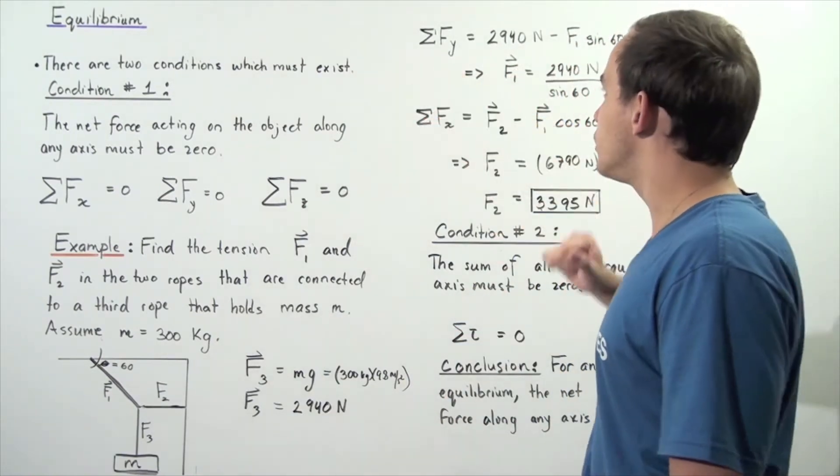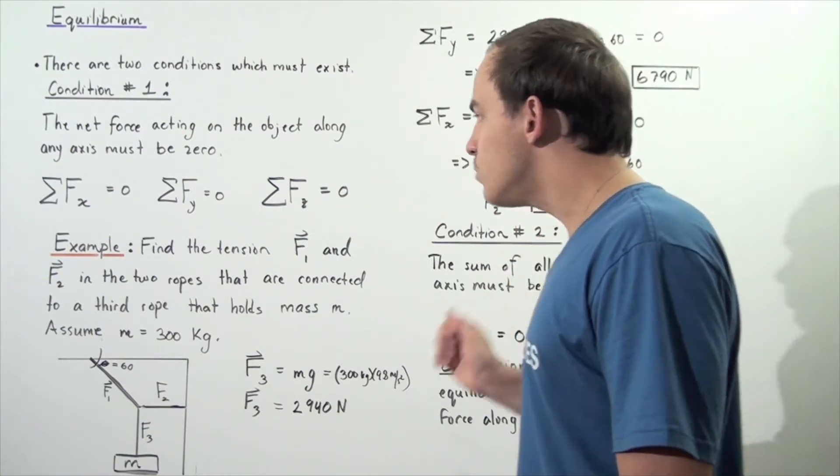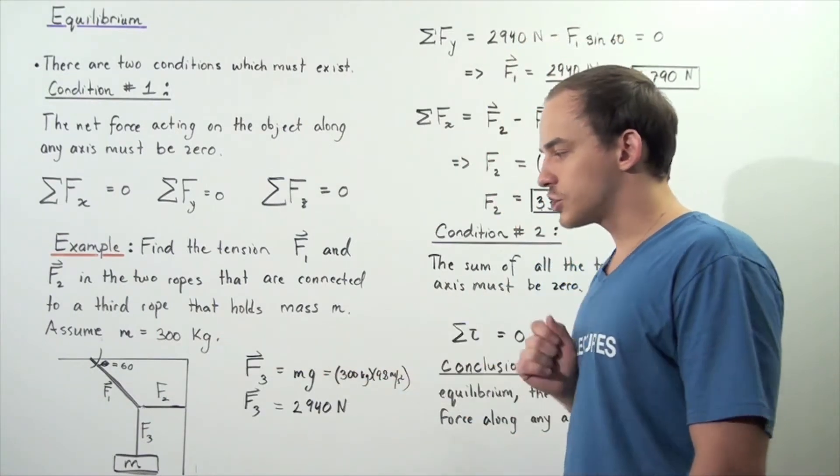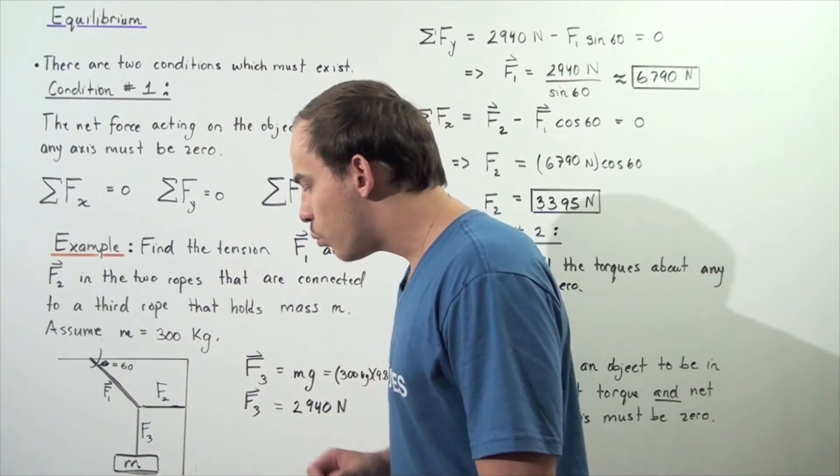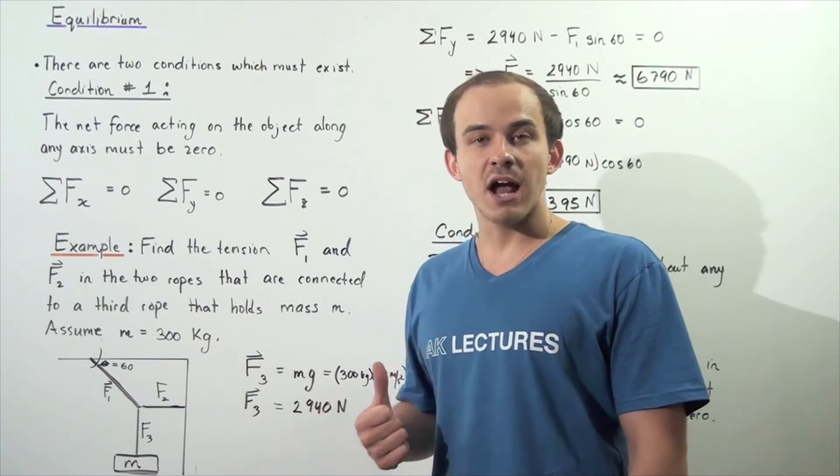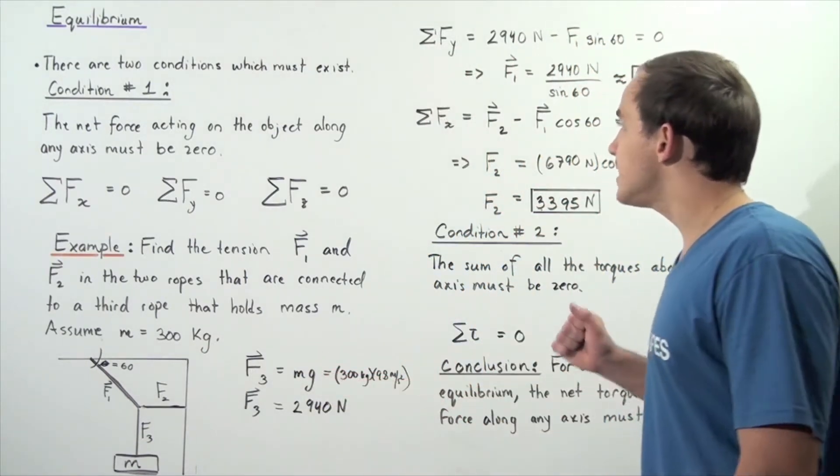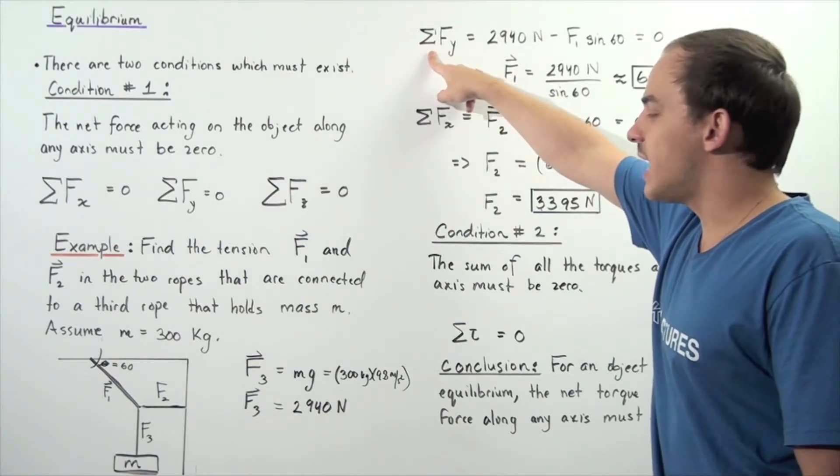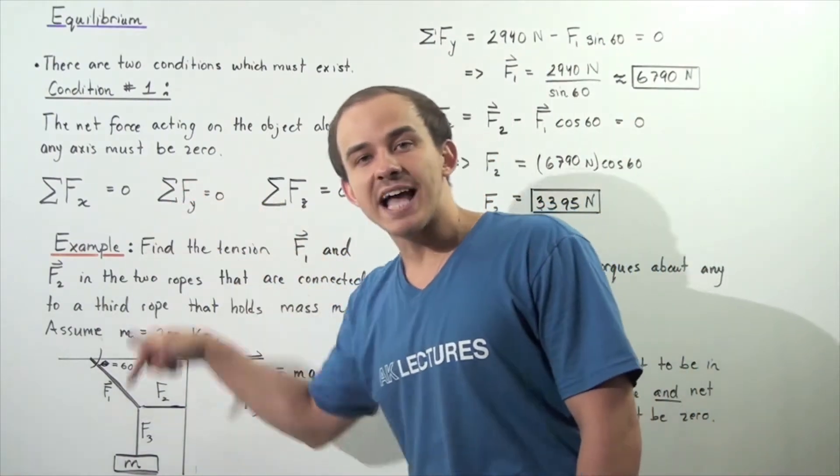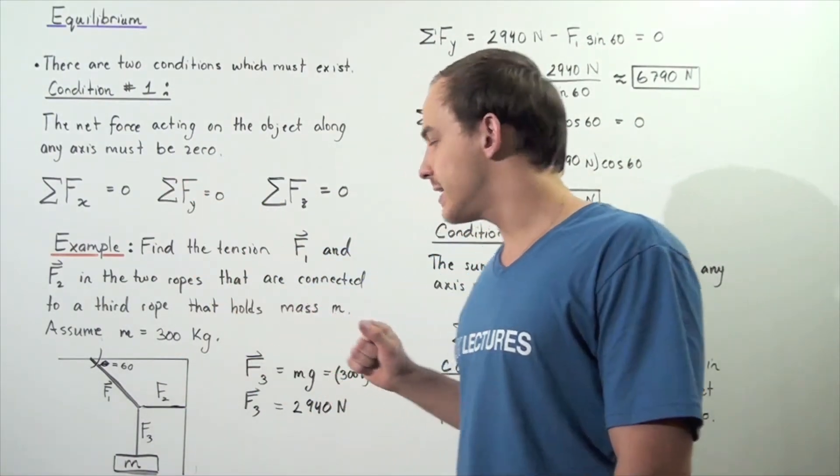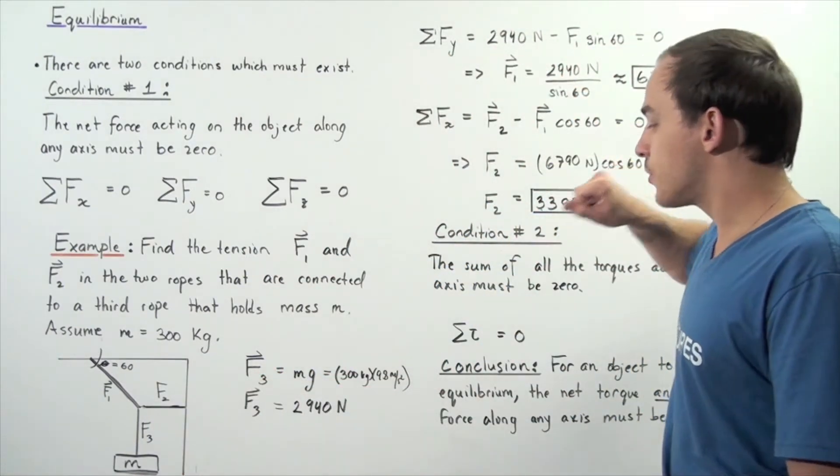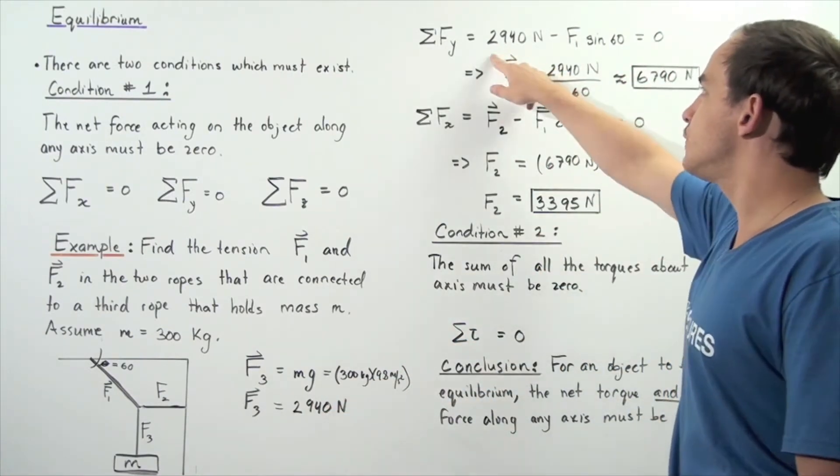Now let's move on to the following two steps. We want to use these two equations to solve for force 1 and force 2. Once again, we assume the object M1 is in static equilibrium. That means the net forces acting on that object along any axis is zero. So the sum of all the forces acting on the object along the y-axis is equal to, so we choose going downward to be positive and going upward to be negative. So the force that points downward is force F3. So we have force F3, which we found to be 2,940 newtons.